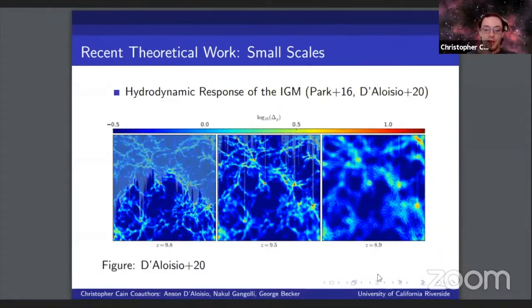This takes place over a timescale of a couple hundred million years, which is comparable to the timescale of reionization. So modeling these processes is also important for capturing the mean free path accurately.